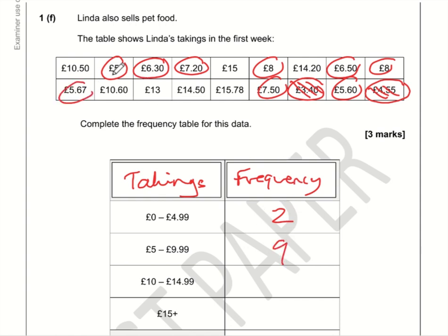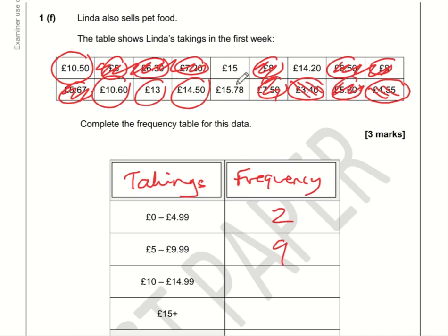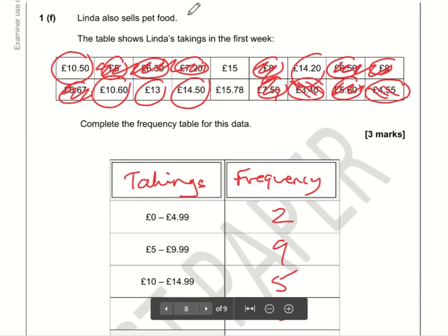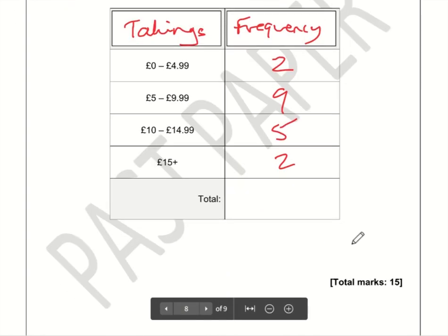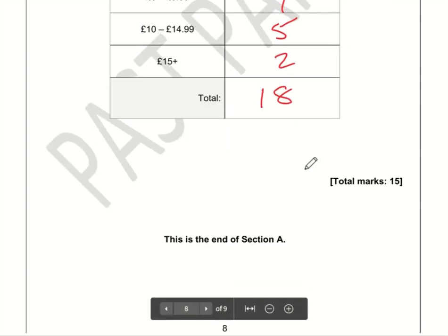Between £10 and £14.99: 1, 2, 3, 4, 5. That leaves just two entries for the final group. Checking the total: 2 + 9 + 5 + 2 = 18. Confirming: 11, 12, 13, 14, 15, 16, 17, 18 — perfect. The total is 18, and that is the end of Section A.